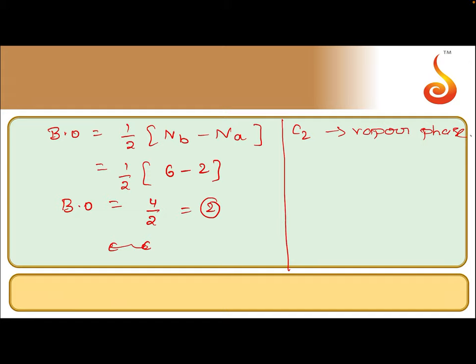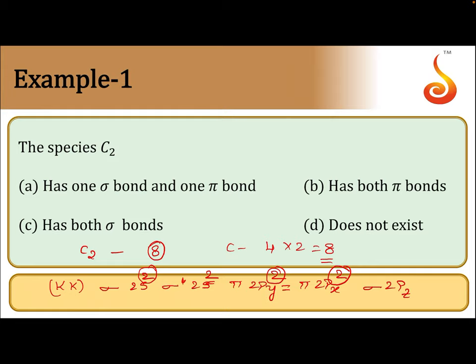It is important to note that here the last electrons — 2 bonds means 4 electrons should be involved in bonding, and all 4 electrons are from pi molecular orbitals. The double bond generally consists of 1 sigma bond and 1 pi bond. But because the 4 electrons are present in 2 pi molecular orbitals, in between the 2 carbon atoms, both the bonds are pi bonds. C2 consists of both pi bonds — it is an exceptional case.